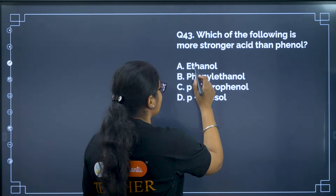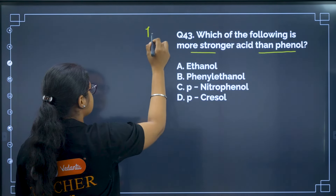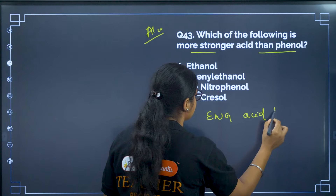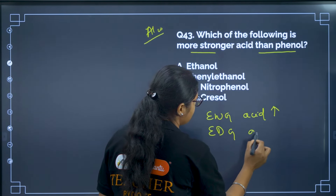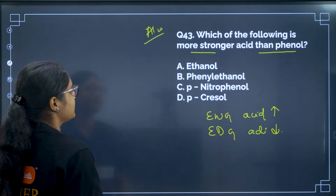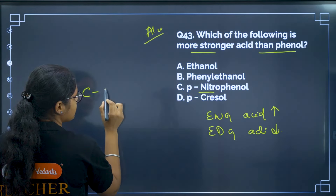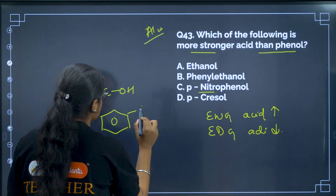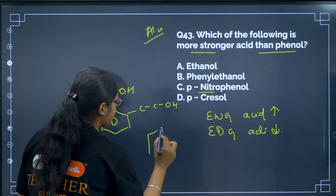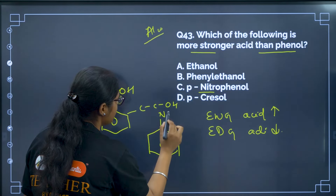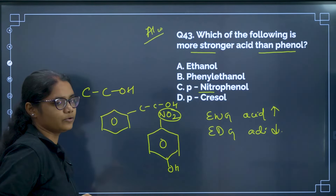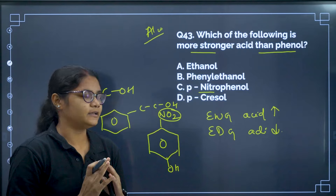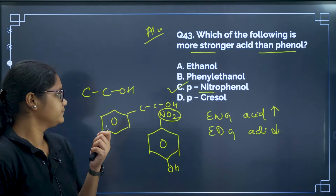Question 43: Which of the following is a stronger acid than phenol? This is from the alcohol chapter. Electron-withdrawing groups increase acidity; electron-donating groups decrease acidity. The options include ethanol, phenylethanol, and para-nitrophenol. The nitro group (NO2) is a very strong electron-withdrawing group that stabilizes the conjugate base, thereby increasing acidity. So the correct answer is option C, para-nitrophenol.